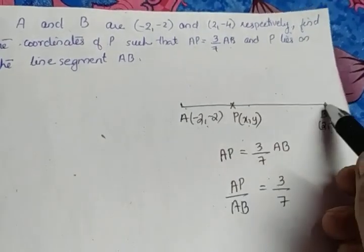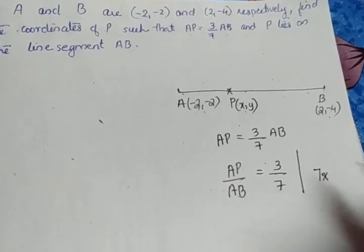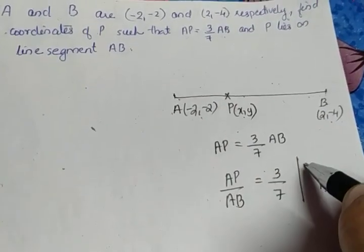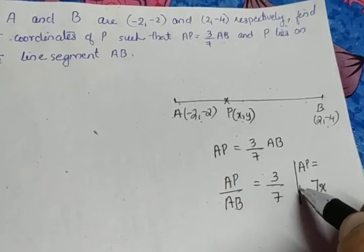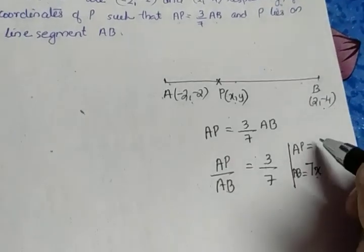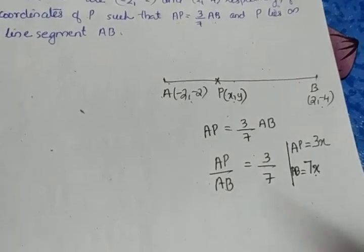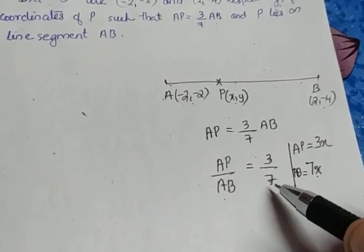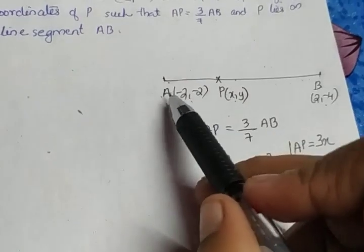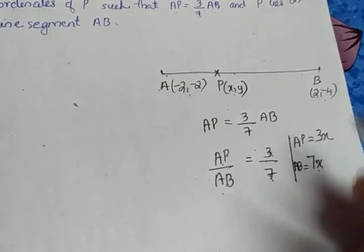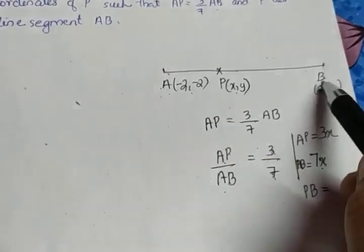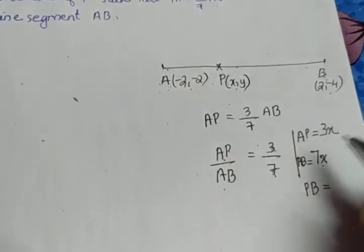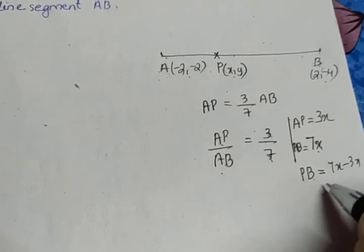Taking the full length AB as 7X, where X can be any value, then AP will be 3X — that is why the ratio AP to AB is 3 to 7. AP is 3X and AB is the full line segment, so PB equals AB minus AP, which is 7X minus 3X, giving 4X.